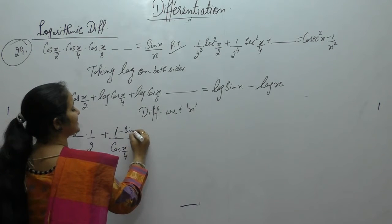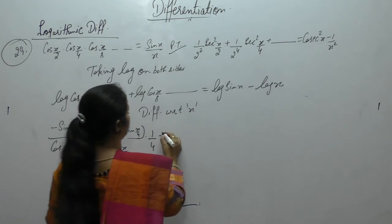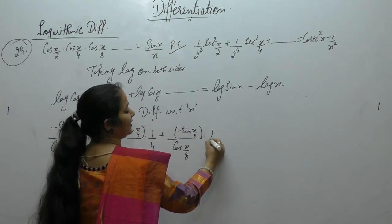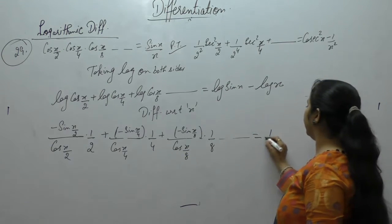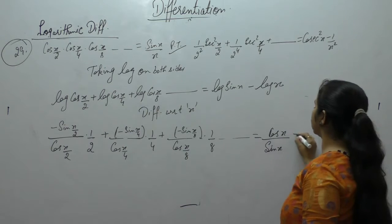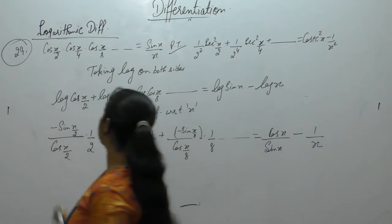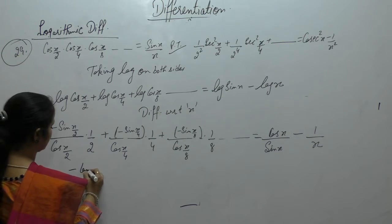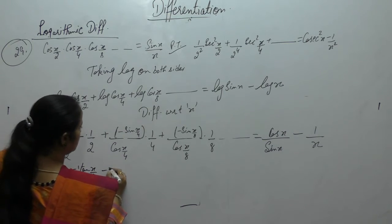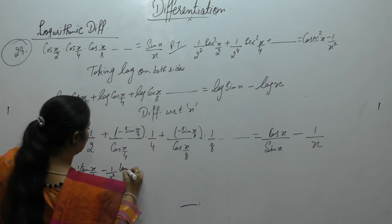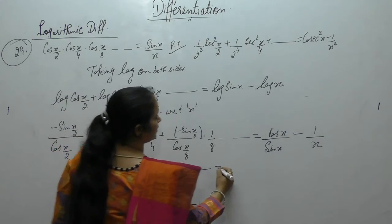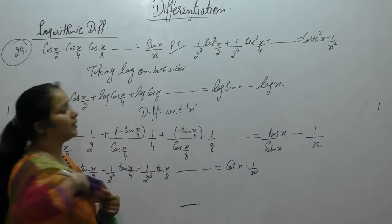Derivative of log cos is (1/cos)·(-sin). Derivative of log cos(x/2): -sin(x/2)·(1/2)/cos(x/2). Derivative of log cos(x/4): -sin(x/4)·(1/4)/cos(x/4). Derivative of log cos(x/8): -sin(x/8)·(1/8)/cos(x/8), and so on. Derivative of log sin x: cos x/sin x = cot x. Derivative of log x: 1/x. So we get -½·tan(x/2) - ¼·tan(x/4) - ⅛·tan(x/8) - ... = cot x - 1/x.